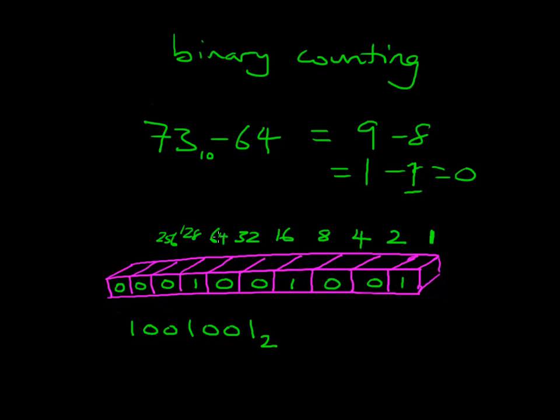And so let's just double check. We've got 1, 64, we've got 1, 8, and we've got 1, 1. So 64 plus 8 is 72, plus 1, which is 73 in base 10, which is the answer which we wanted to get.